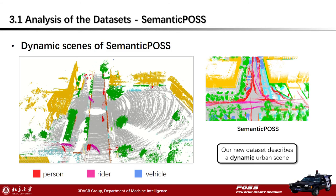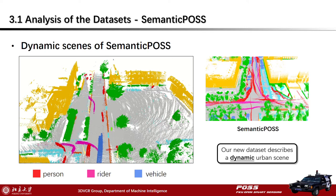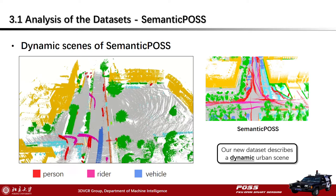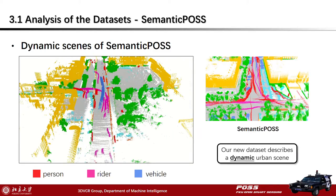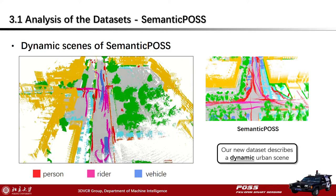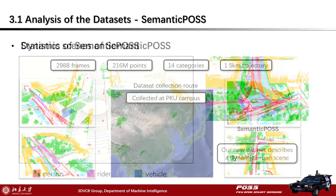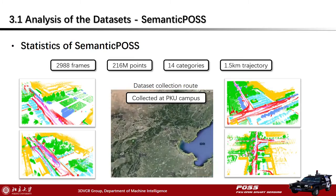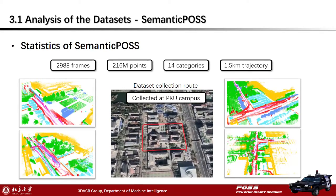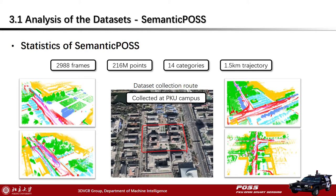This is a visualization of the Semantic POS dataset, showing its abundant dynamic information. The LiDAR frames are accumulated over time, and you can see many trajectories of moving objects like persons, riders, and vehicles. Semantic POS is collected at the campus of Peking University. It includes nearly 3,000 LiDAR frames and 200 million points, and the most typical feature of Semantic POS is a large quantity of dynamic objects.